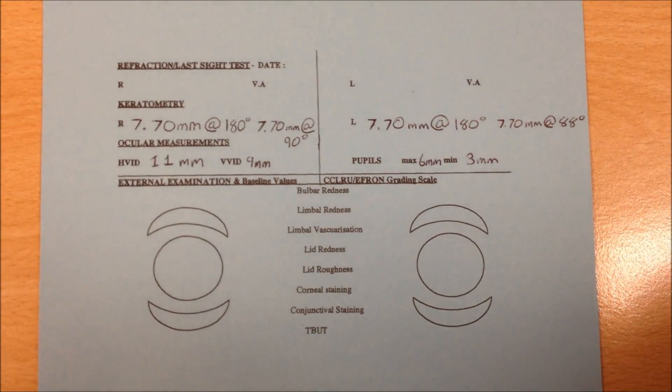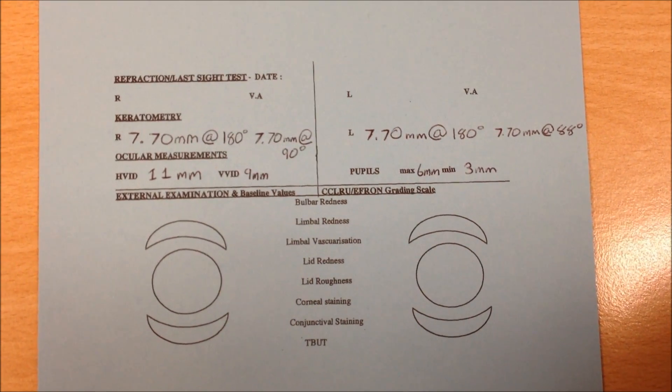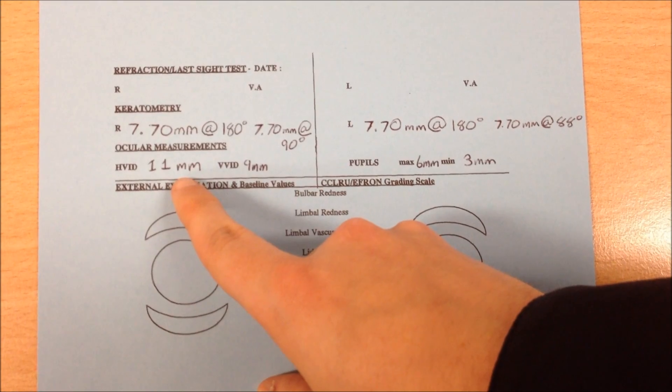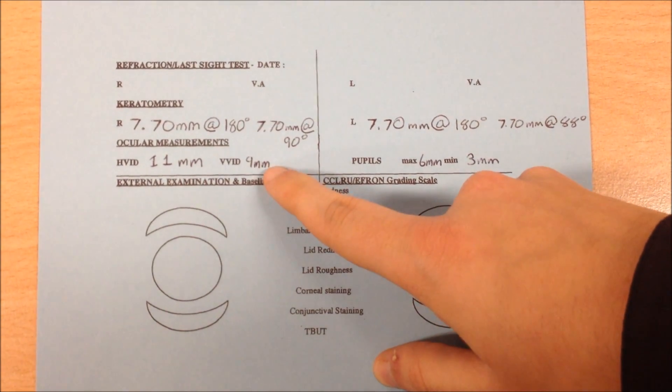Here we have the recording sheet for what we would use to record down all the ocular measurements. The first thing we looked at was the HVID, so just record that down there as we saw in the video, 11mm, and we got the VVID, this was down as 9mm, you just write that here.